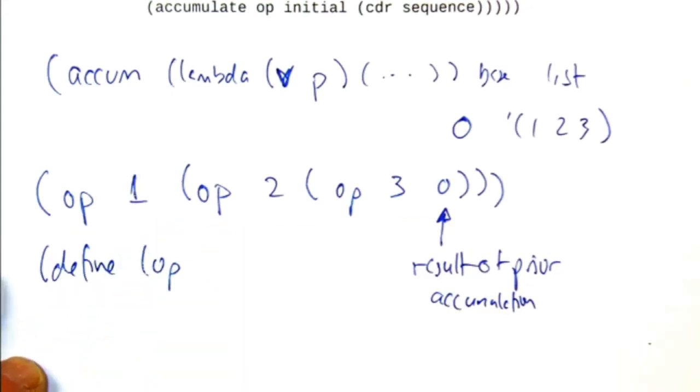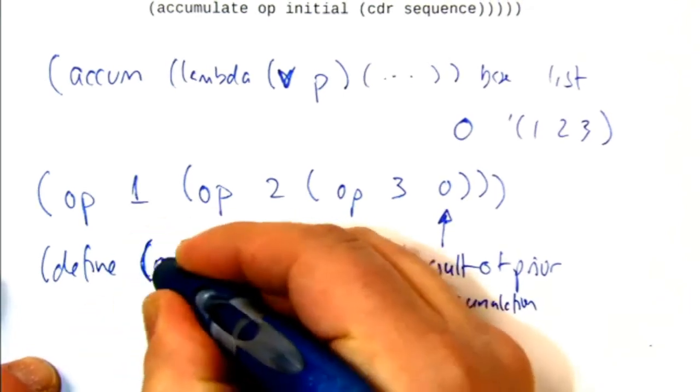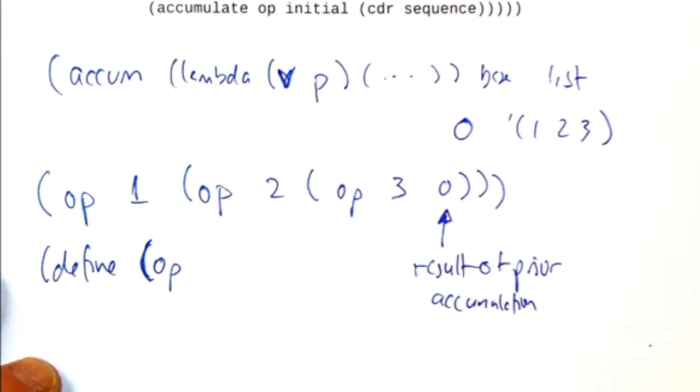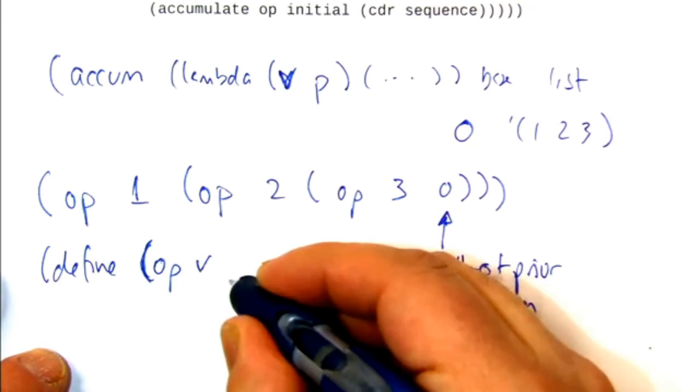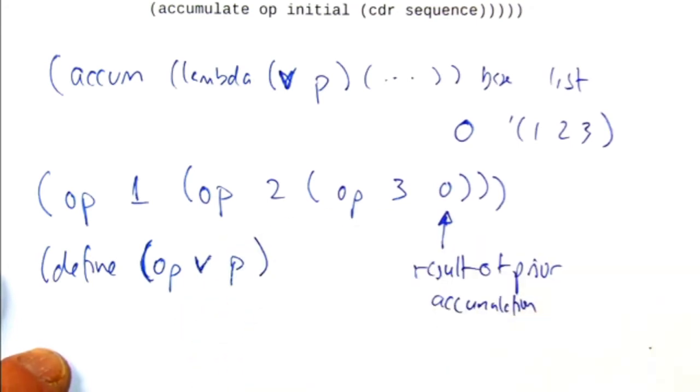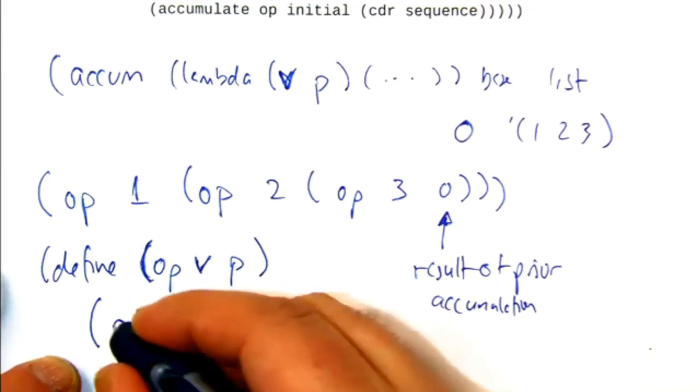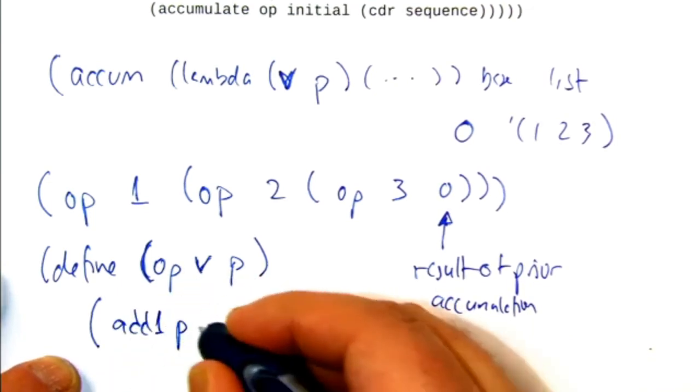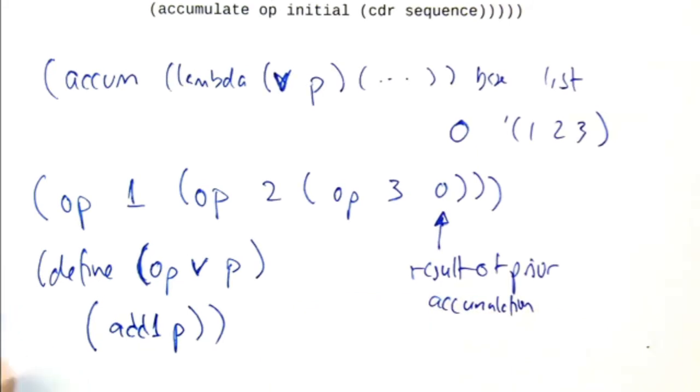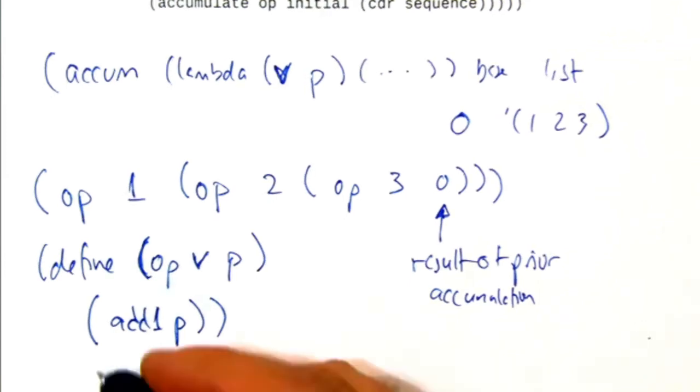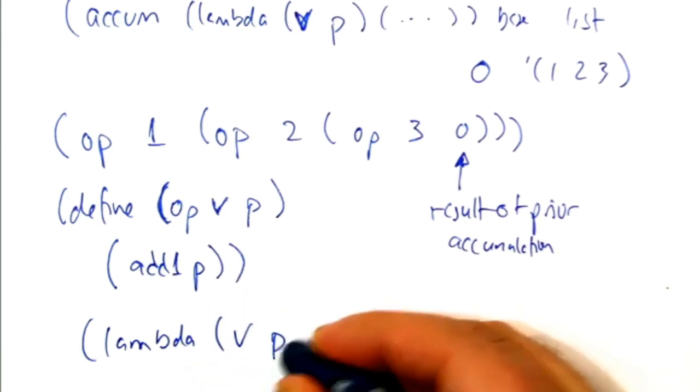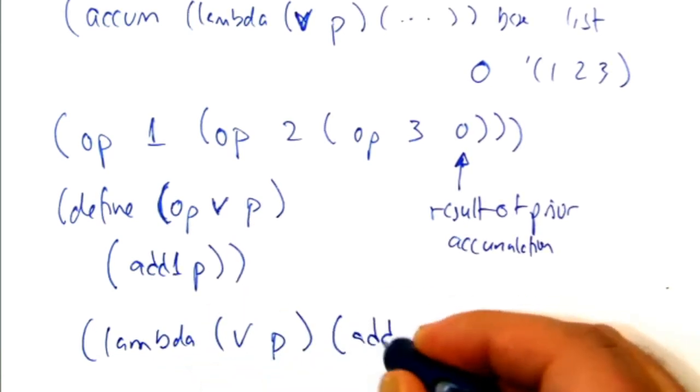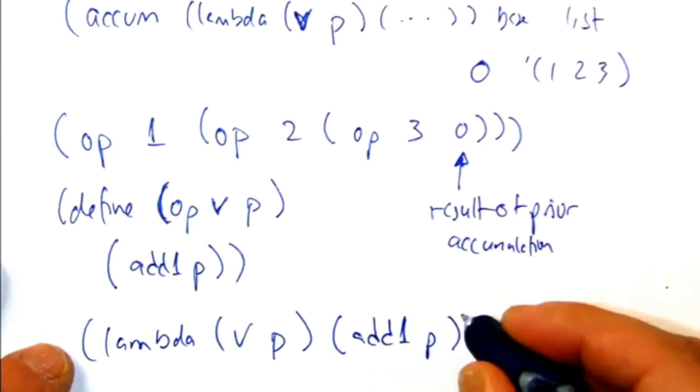So I'm going to make it as op, then we'll rewrite as a lambda. So it's going to take a value and a prior and basically all it does is add one to prior. That's the whole procedure. It throws away the value and increments the prior value. So written as a lambda, it's a lambda of a value and a prior and it's add one prior. That will do it.